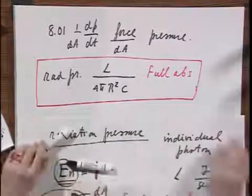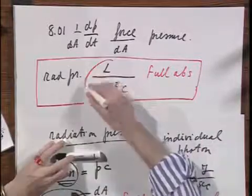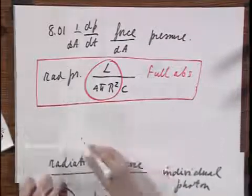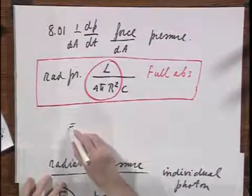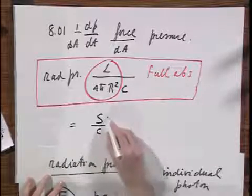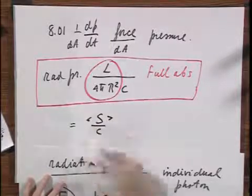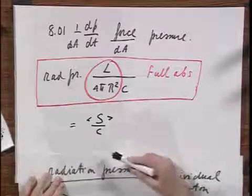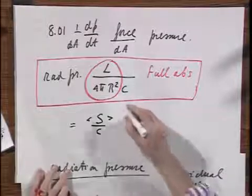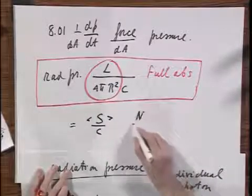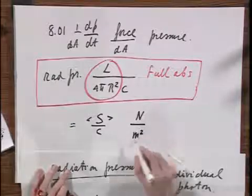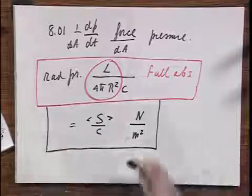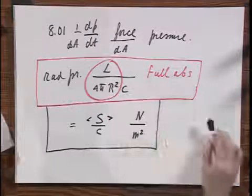Now, this quantity here we earlier called the Poynting vector. So the radiation pressure is also the Poynting vector divided by C. But now I have to take the mean Poynting vector because we have to take into account the oscillation of the electromagnetic radiation. And you should convince yourself that both this and this are in units of newtons per square meter. So whichever one of the two you want to apply, it's fine. Either one will do.